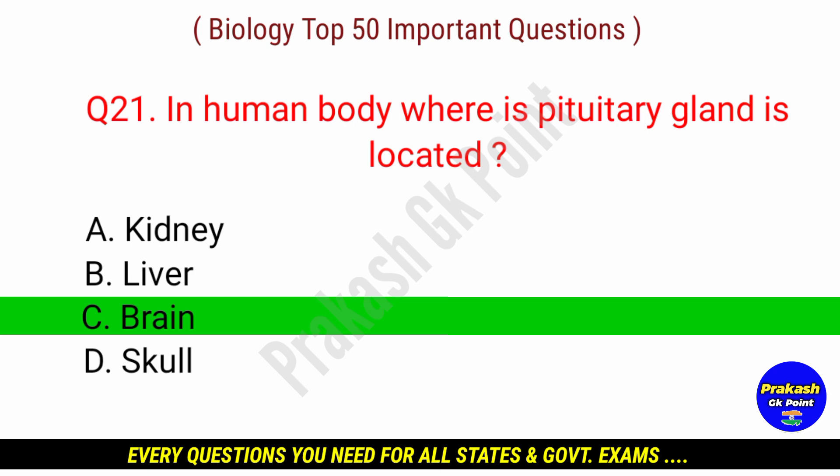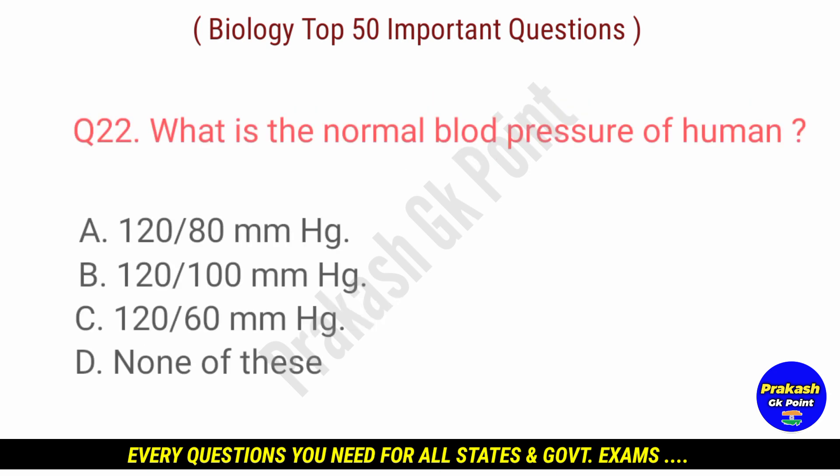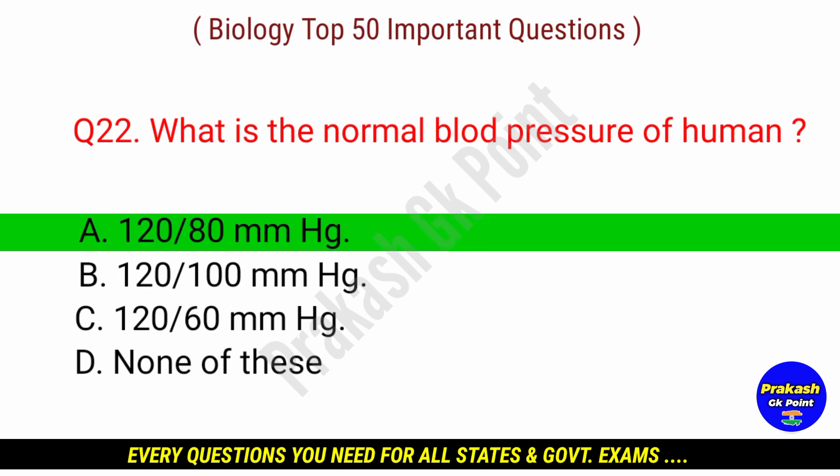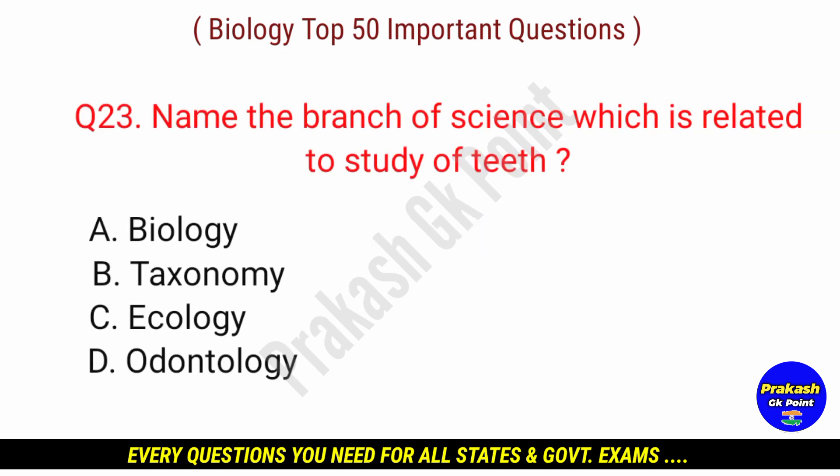Answer: option C — Brain. Next question: what is the normal blood pressure of a human? Answer: option A — the normal blood pressure of a human is 120 by 80.